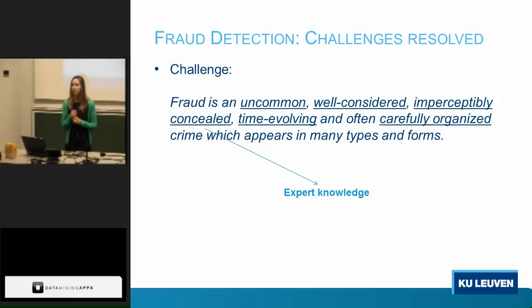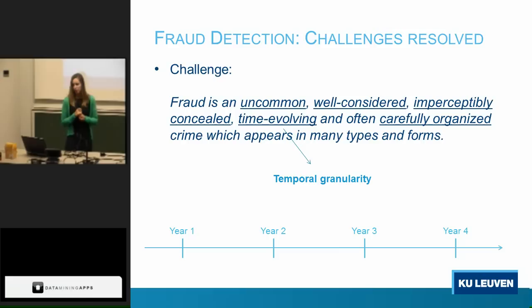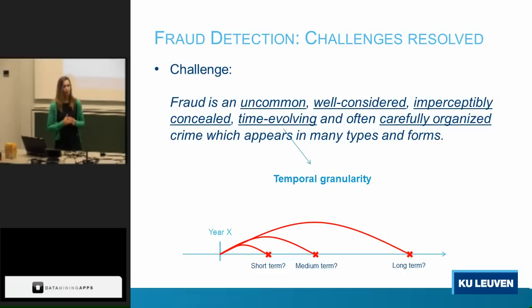Fraud is imperceptibly concealed, meaning it's difficult to identify in a network or in a dataset. That's why I suggest, if there are experts, ask them what they think about fraud and what their expectations are. Use their expert knowledge to create features. A fourth characteristic is that it's time-evolving, meaning that fraud today is not the same as fraud tomorrow. A model should work on year one, but it should also work on year two, year three, and year four, and it should incorporate changes in the environment.